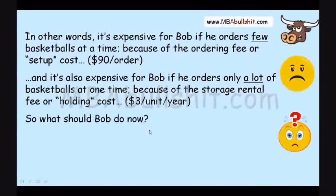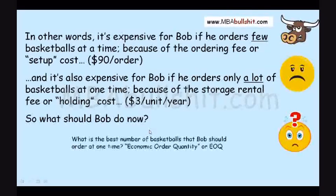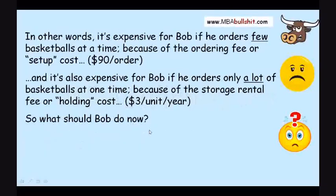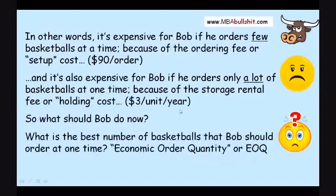In other words, it's expensive for Bob if he orders few basketballs at a time because of the ordering fee or setup cost which is $90 per order. And it's also expensive for Bob if he orders a lot of basketballs at one time because of the storage rental fee or holding cost which will cost him $3 per basketball per year or $3 per unit per year. So what should Bob do now? Should he order a lot at one time or should he order a little every month? What is the best number of basketballs that Bob should order at one time? That number that we're looking for is called the economic order quantity or EOQ.